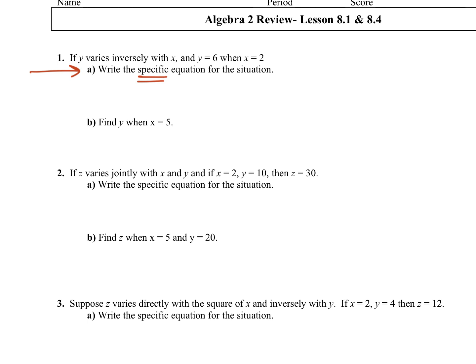It asks you to write a specific equation for the situation. A specific equation means that k is a number. Everything else is a variable. So when I ask for the specific equation, the only place you should have a number is for k. That's the general equation. I want to know what k is.